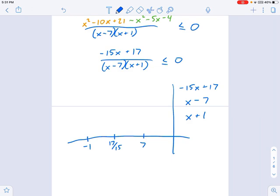So now we fill in our plus signs and our minus signs. Here's the x plus 1. Here's the x minus 7. And here's the screwy one, the negative 15x plus 17. So now you run down with multiplication and you figure out what the total is. Three negatives makes a negative. Two negatives makes a positive. One negative makes a negative. Three positives makes a positive.